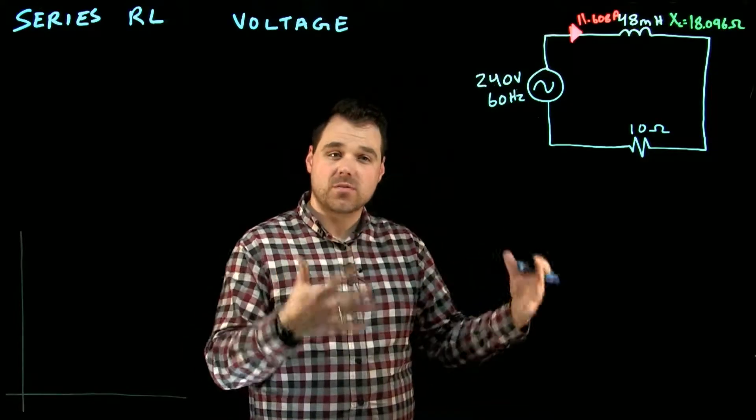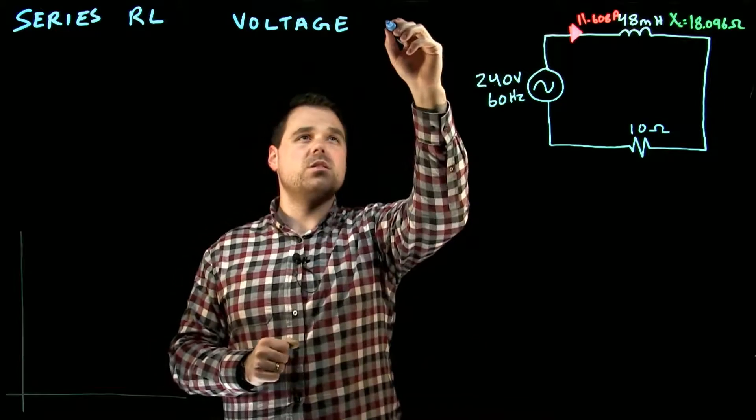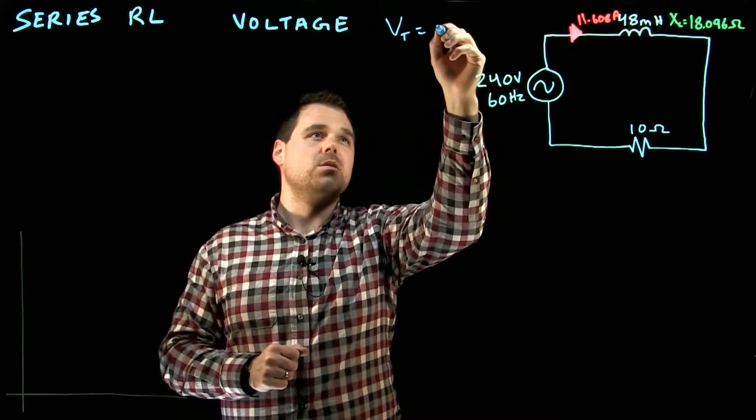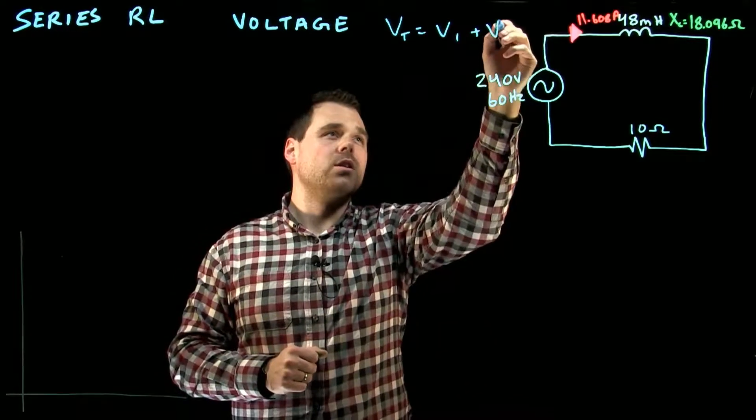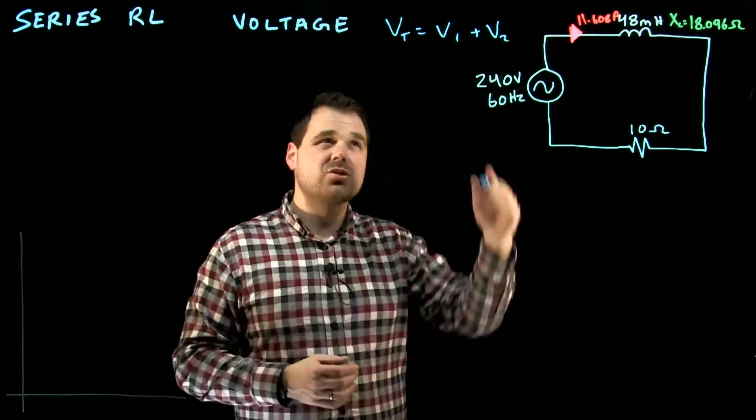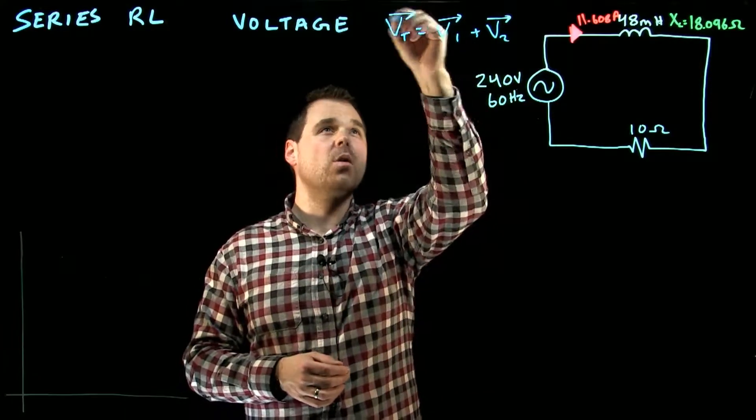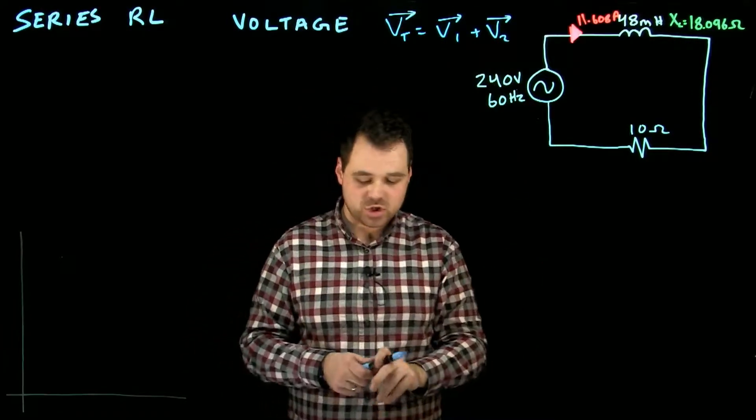This comes from our series Kirchhoff voltage law, right? All the voltages add up, so we're using this law of VT equals V1 plus V2 in this case. But now that we're talking about a resistive reactive circuit, we're actually doing these all vectorally and we'll walk through that, but it's just a basic series circuit law.